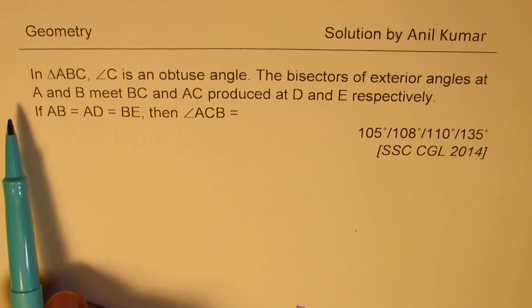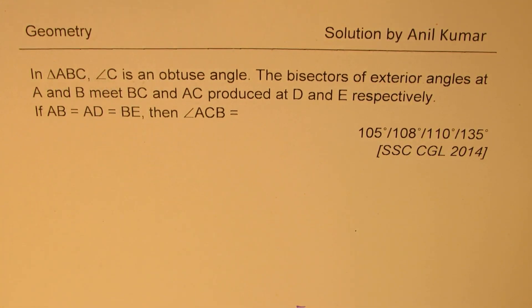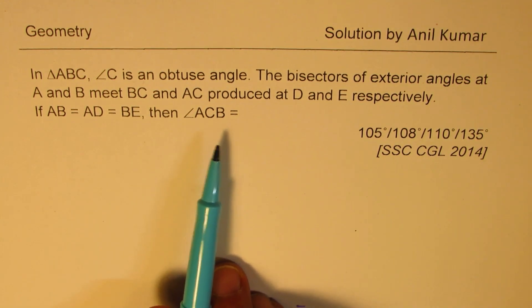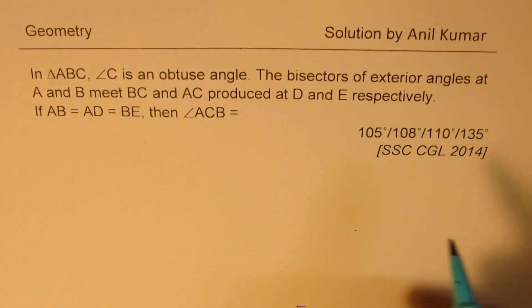These are the four choices. The question here is: in triangle ABC, angle C is an obtuse angle. The bisectors of exterior angle at A and B meet BC and AC produced at D and E respectively. If AB equals AD equals BE, then angle ACB is equal to what? I think the challenge here is to sketch the diagram itself. So let's make an attempt to sketch the diagram.